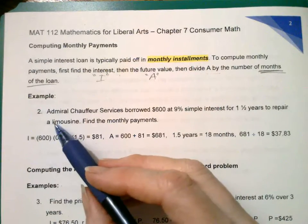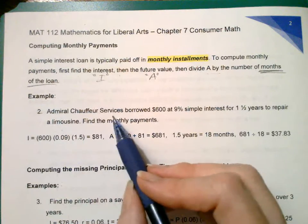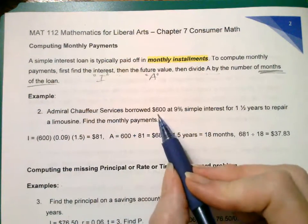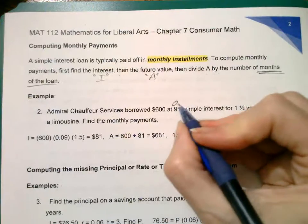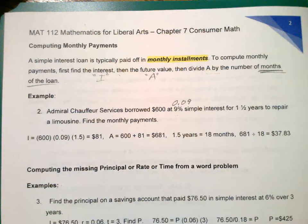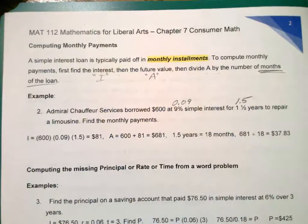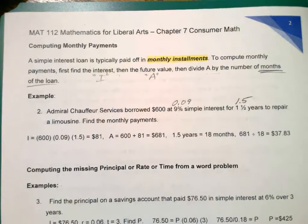So for example, Admiral Chauffeur Services borrowed $600 at 9% simple interest for a year and a half for repairs for limousine. Find the monthly payments.